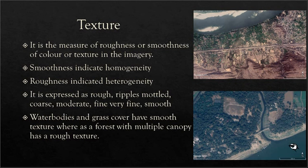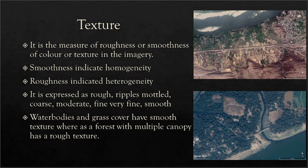Smoothness is basically indicative of homogeneity, whereas roughness is indicative of heterogeneity. The expressions of roughness can be ripple, molten, coarse, moderate, very fine, fine, and smooth — so there can be many expressions for texture.